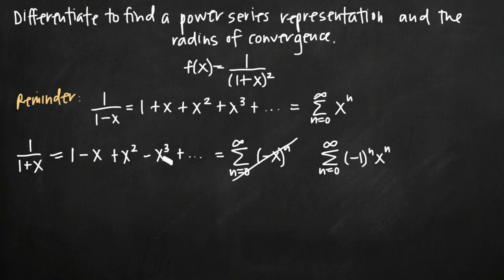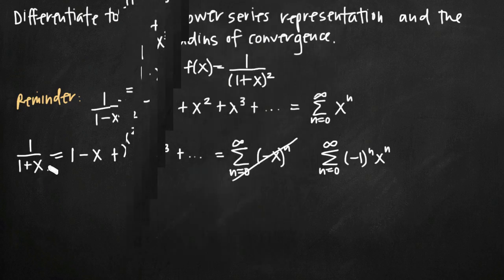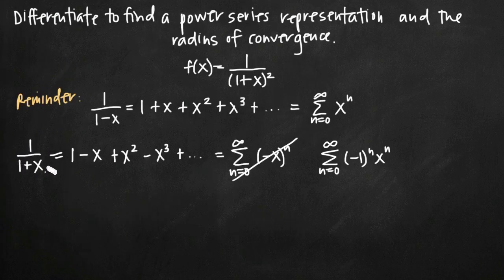Now what we want to do is differentiate all three pieces of this well-known power series. The reason is that when we differentiate a rational function using the quotient rule, the denominator of our derivative is the original denominator squared. So when we differentiate 1 over 1 plus x, the new denominator will be the quantity 1 plus x squared — which is exactly our original denominator from f of x. So we're hoping this derivative will match f of x.